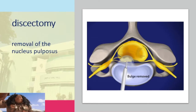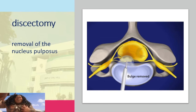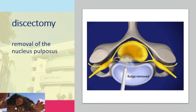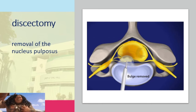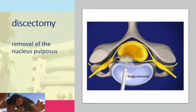Discectomy involves the removal of the nucleus pulposus. The removal of the nucleus pulposus is done to remove the compression on the spinal cord.